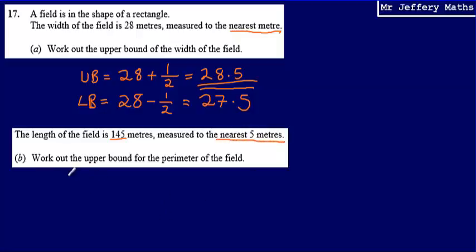So in order to work out the upper bound of the perimeter of the field, I'm going to need to work out what the upper bound for the length was as well. So the upper bound for the length, using the same idea as above here, I'm going to take the value that I've been given, 145. And for the upper bound, I'm going to add the degree to which it has been measured, so the accuracy to which it has been measured, which is the nearest 5 metres. And then I'm going to divide that by 2. So 145 plus 5 divided by 2, which is 2.5, and that's going to give me 147.5.